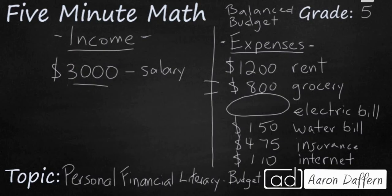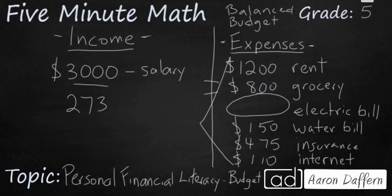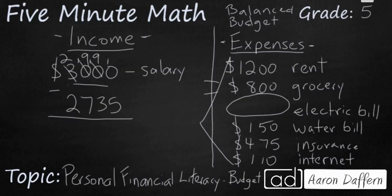Why don't you take a moment, see if you can solve that problem, and when you have your answer, unpause the video and let's check our work. To see what our missing item is, we need to add up what we currently have. If we add up all of the expenses we know so far, that is going to get us $2,735. In order for it to be a balanced budget, this $2,735 needs to equal $3,000, which means we can find the missing piece by simply subtracting the two. So if we subtract, we have $265. If the electric bill is $265, that means our budget is balanced.